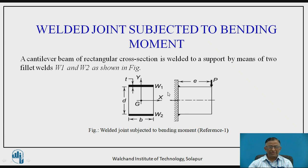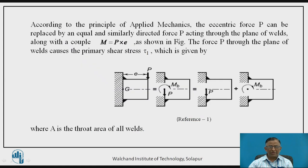This is a cantilever beam having a rectangular cross section, which has been welded to the support by two horizontal fillet welds as shown over here. An eccentric load P is acting at the end of the cantilever beam having eccentric distance E. This causes a bending moment. According to the principle of applied mechanics, the eccentric force P can be replaced by an equal and similarly directed force P acting through the CG of the weld section, and also a couple — that is a bending moment.